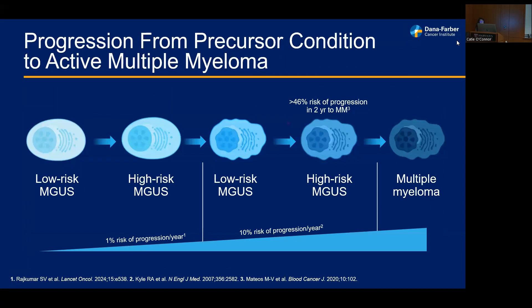These precursor conditions, MGUS and smoldering, exist on a spectrum with MGUS on one end and smoldering myeloma on the other. The risk of progression for MGUS, which we consider a benign precancerous condition, is roughly about 1% per year — progressing to smoldering myeloma, AL amyloidosis, or active myeloma.